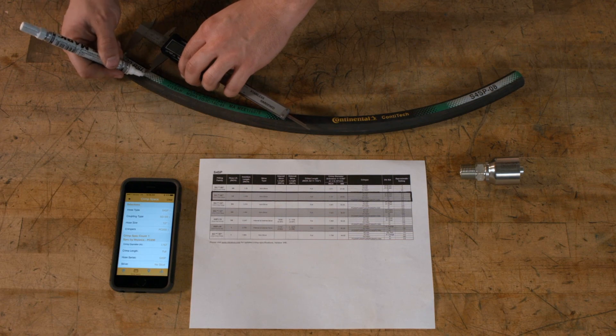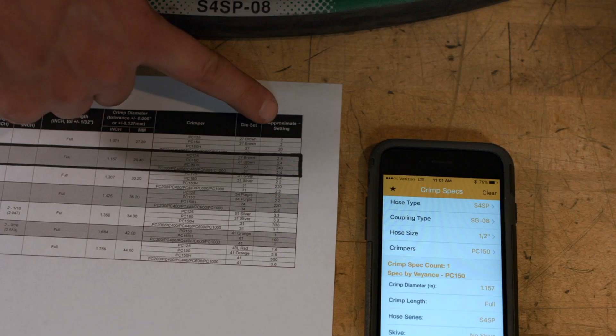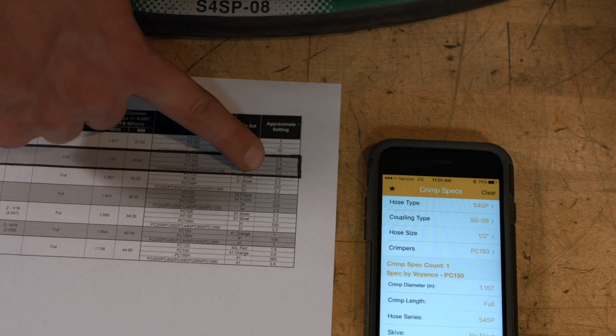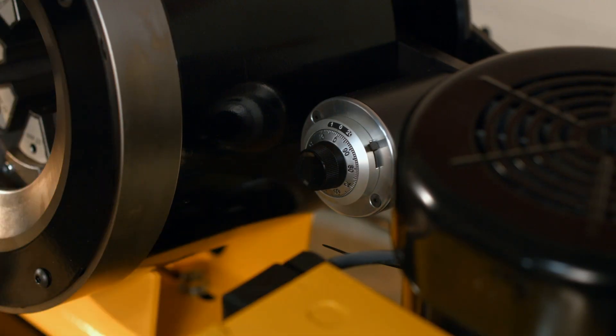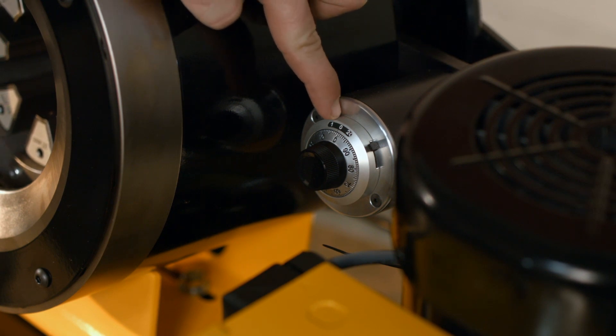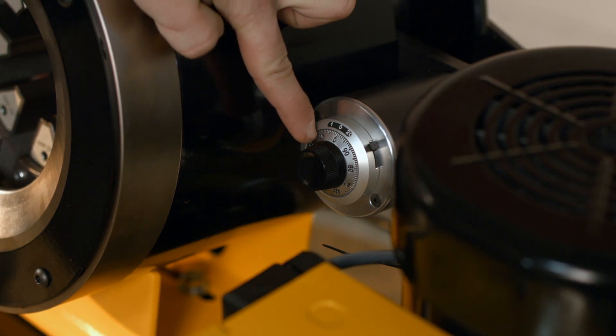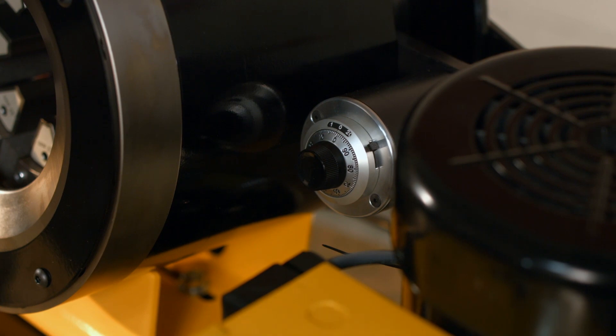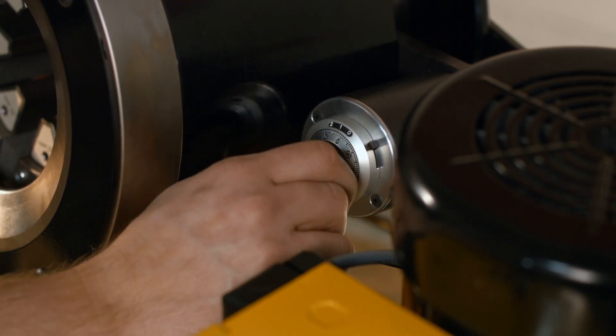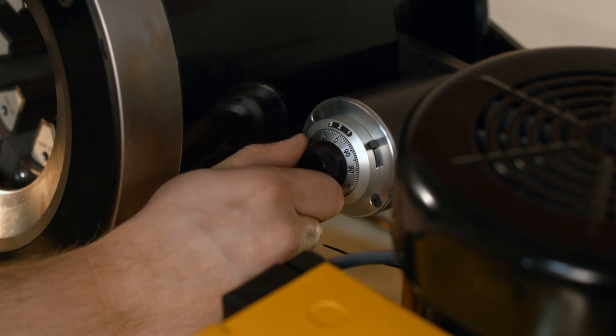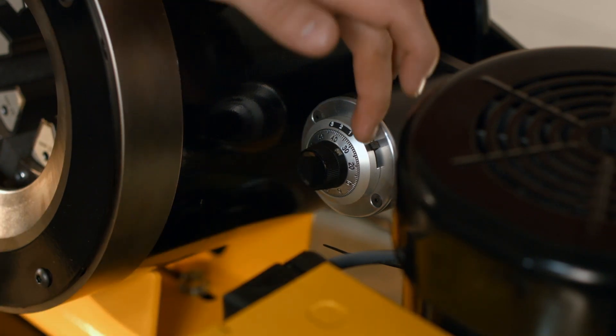Set the crimper's micrometer to the recommended setting using the number provided in the operating manual. This can be done by rotating the top dial. The top number represents the whole unit, while the number on the dial is for the decimal. In this example, we are using a setting of 2.4, which requires us to rotate the dial to place a 2 in the top window and .4 or 40 on the dial itself. When finished, lock the micrometer.